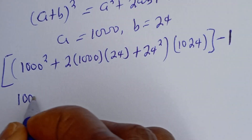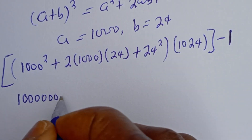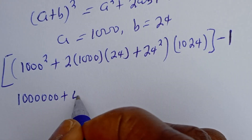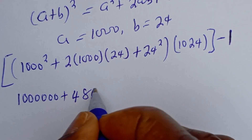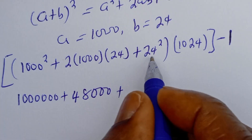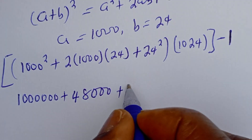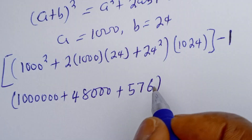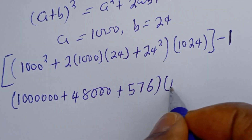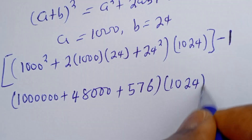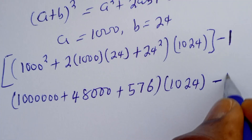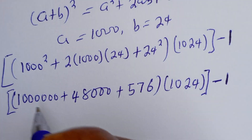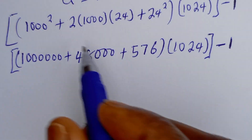1000 squared is 1,000,000; plus 2 times 1000 times 24, that is 48,000; plus 24 squared, that is 576. Then everything multiplied by 1024, and minus 1.